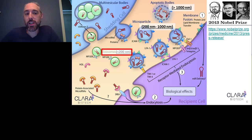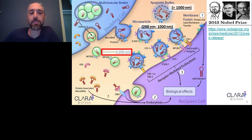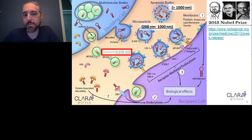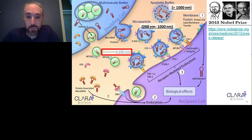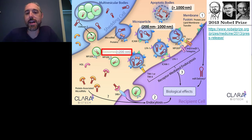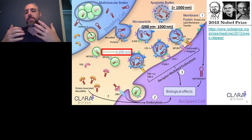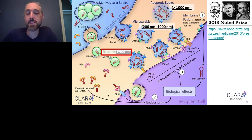The Nobel Prize was awarded in 2013 to Dr. James Rothman, Randy Sheckman, and Thomas Sudhof for their discoveries of machinery regulating vesicle traffic, a major transport system in our cells. Exosomes are a classification of vesicles. In the very early work, exosomes were recognized to be a waste disposal mechanism from cells. It was only recently, in the last 10 years, that we really started to understand the actual biological mechanisms and that the function of these exosomes goes so much further.